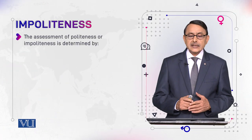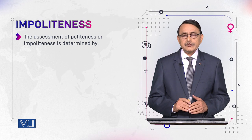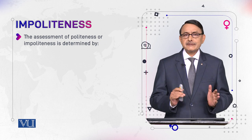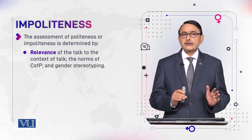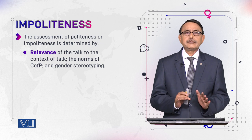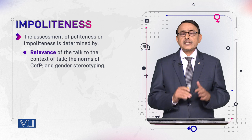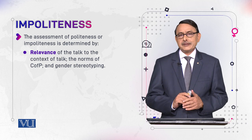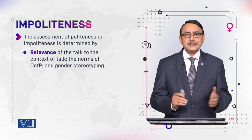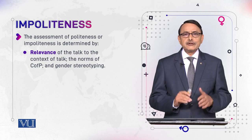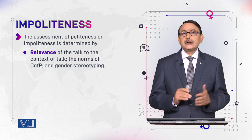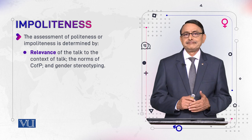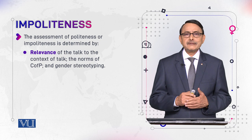The assessment of politeness or impoliteness is determined by three factors. Number one: relevance — the relevance of the talk to the context, for example whether it is in an office between a boss and an employee. Number two: the norms of the Community of Practice — what are the norms of that organization? These norms decide whether your linguistic behavior was acceptable or unacceptable. Number three: gender stereotyping — how people expect a man or woman should use language.